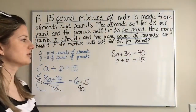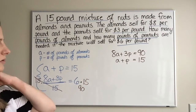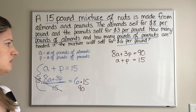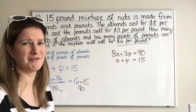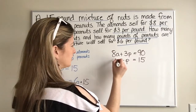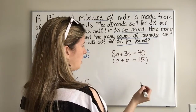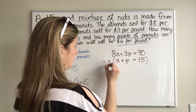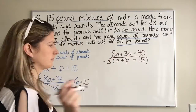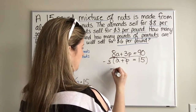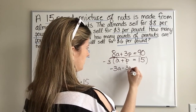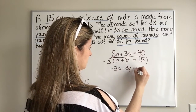I'm going to solve this using elimination. I'm going to multiply the second equation, A plus P equals 15, by negative 3 — draw those arrows, don't forget. That gives us negative 3A minus 3P equals negative 45.